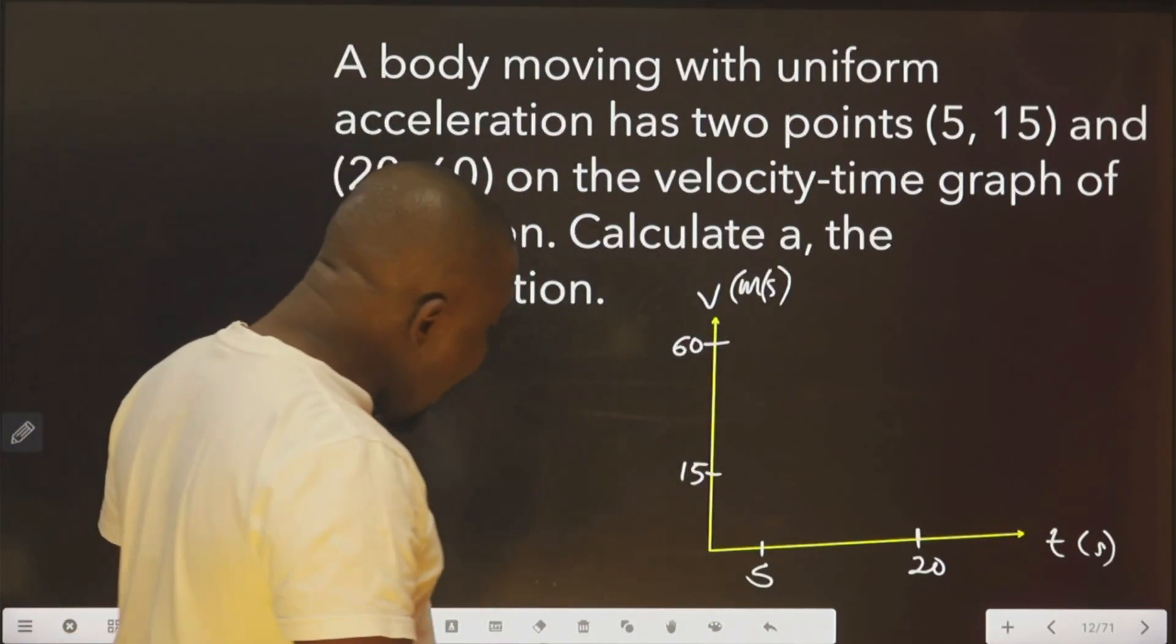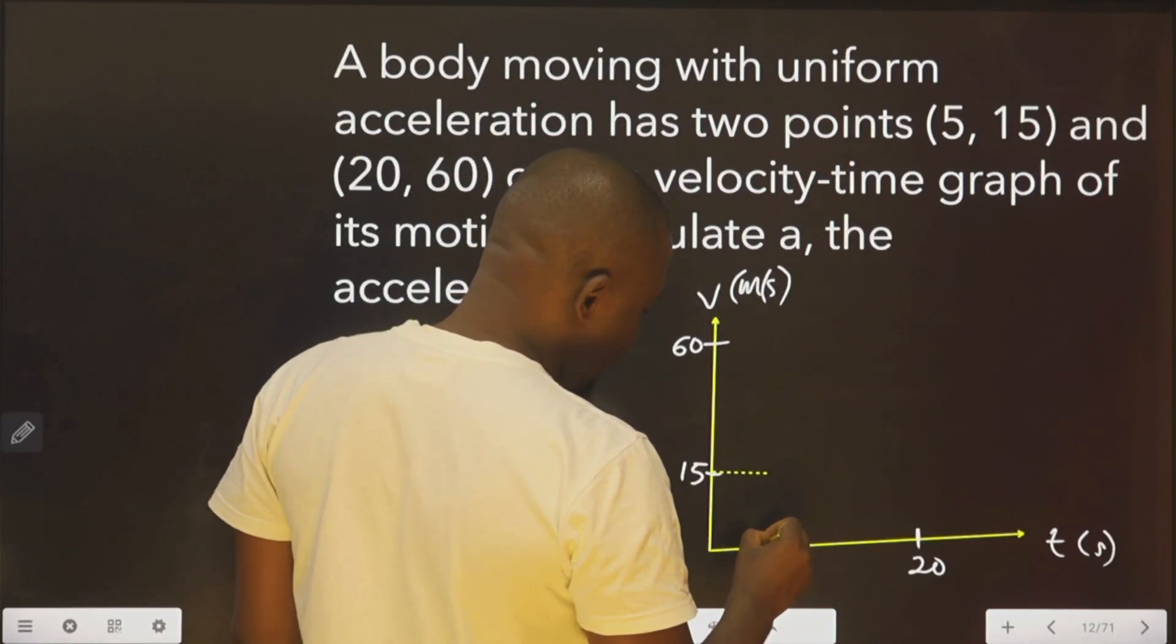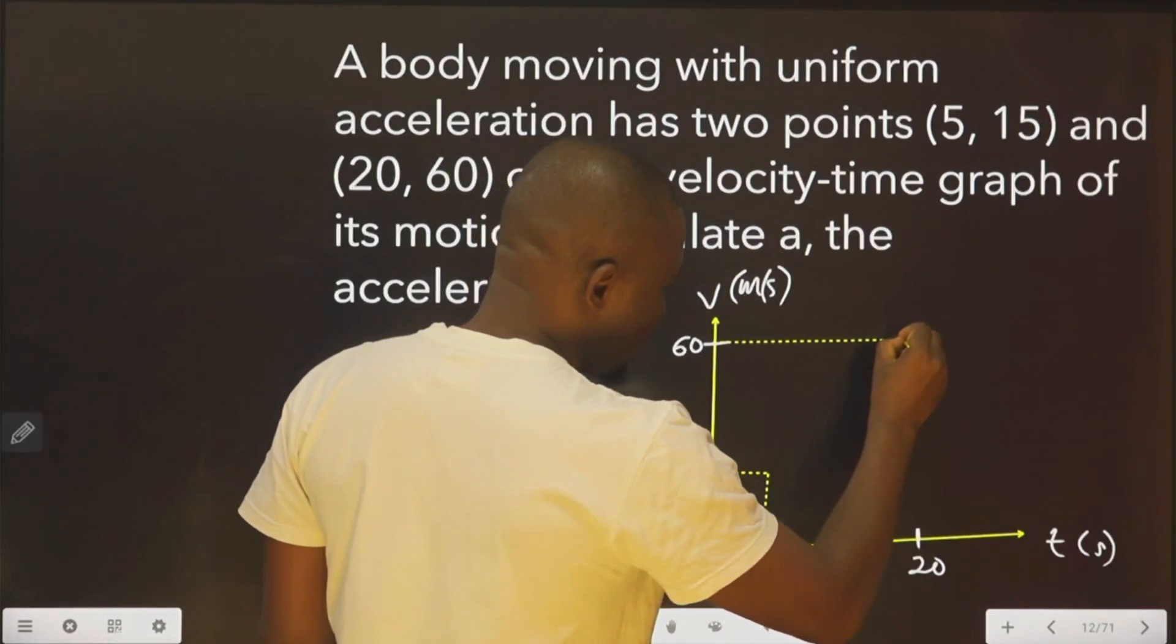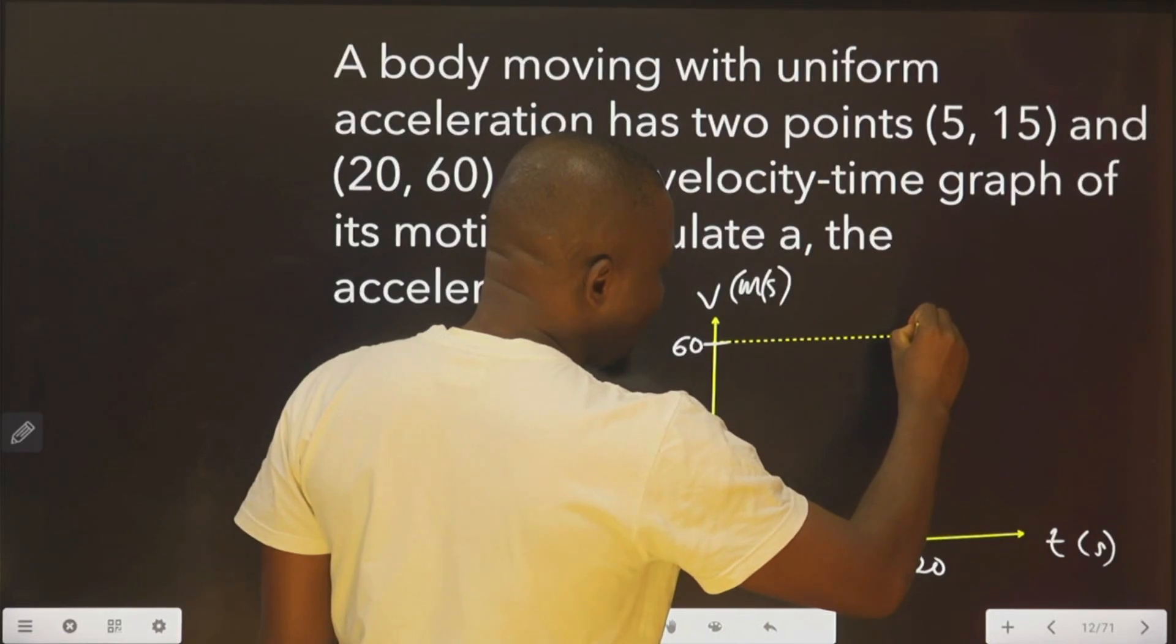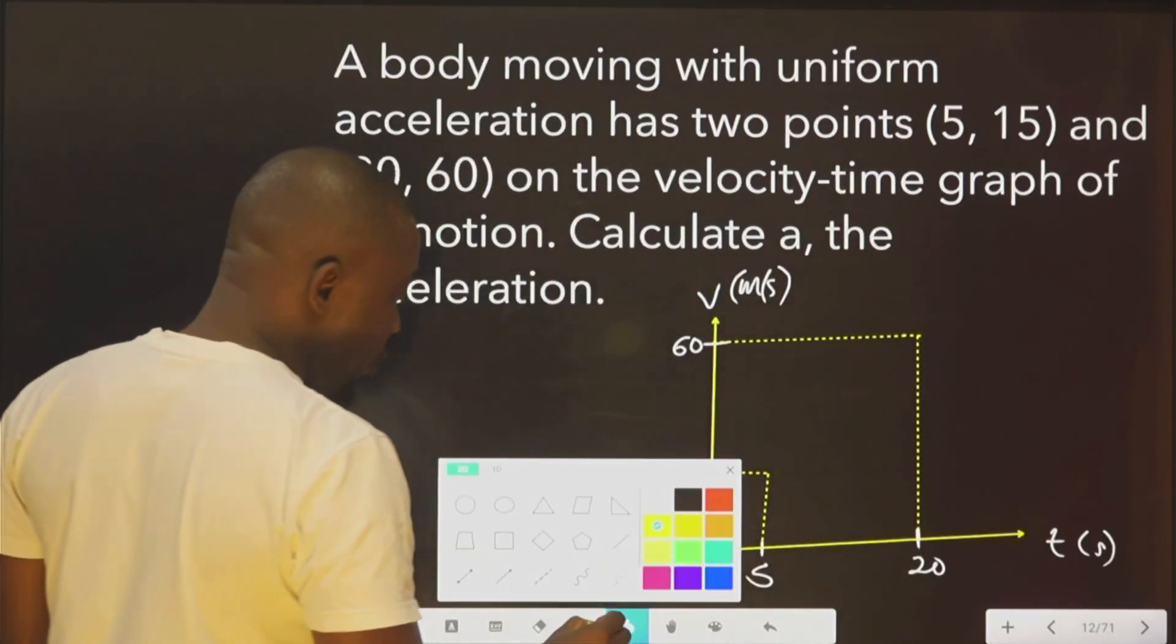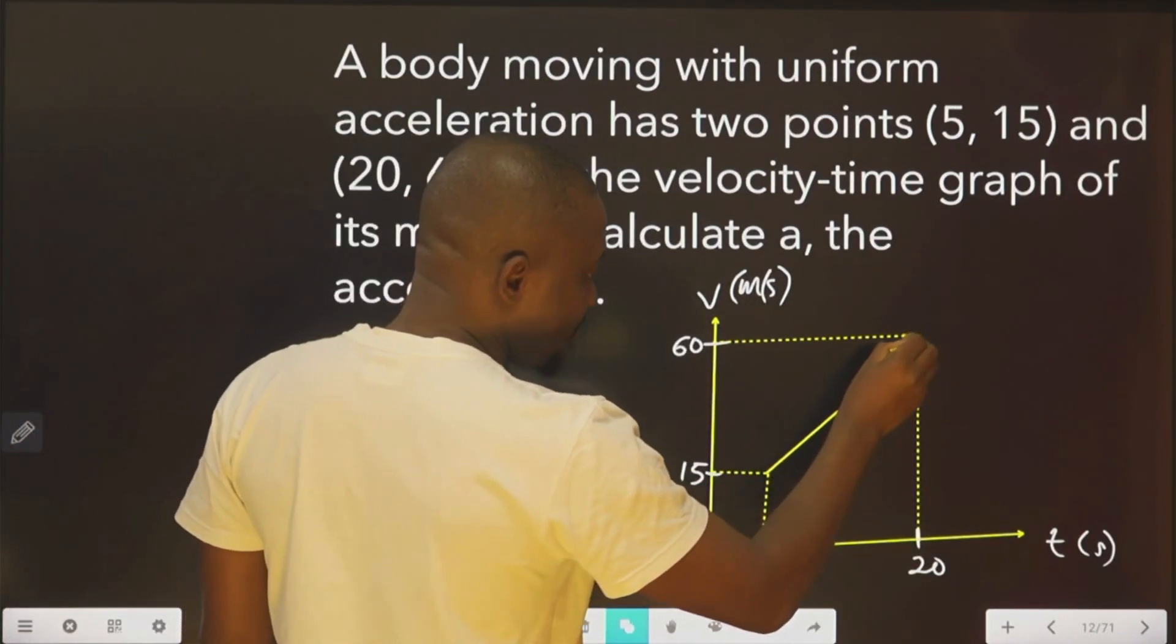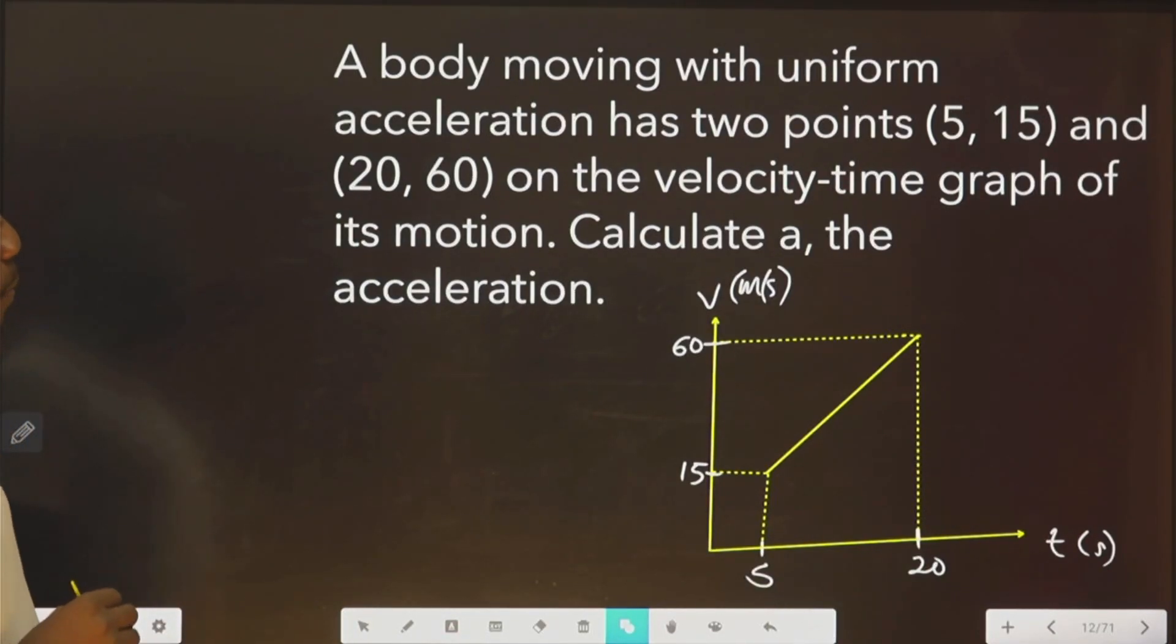Now, we are going to plot. I'm going to plot this. Plot it here. Plot this. Let's assume these are straight lines. Plot it here. Now, we draw a straight line from these two coordinates. Now, the question says, calculate the acceleration. Remember, acceleration is velocity over time.